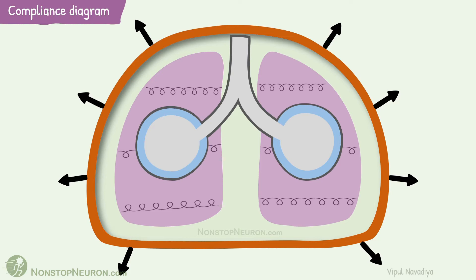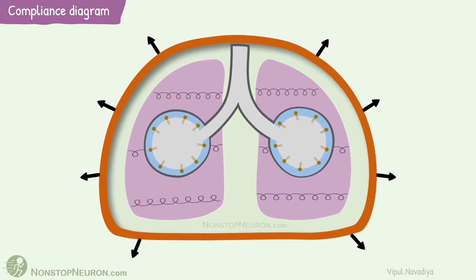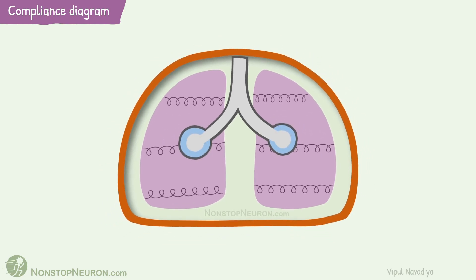Then as the transpulmonary pressure decreases, the lungs collapse. But by the time the lungs have expanded, surfactants come to the surface and decrease the surface tension. Because of this decreased surface tension, the trend of collapse is different from that of expansion. Initially, a fall in transpulmonary pressure causes a smaller deflation of the lungs. Due to decreased surface tension, it's easy to keep lungs expanded even at lower transpulmonary pressure. With further decrease in transpulmonary pressure, the lungs eventually collapse. This is how lungs inflate and deflate with changing transpulmonary pressure.